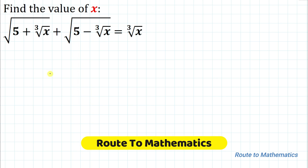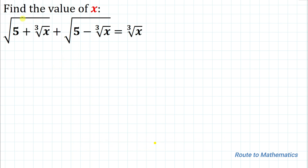Hello everyone, welcome to Root to Mathematics. In this video we are going to solve this interesting question. The given question is: find the value of x from the equation √(5 + ∛x) + √(5 - ∛x) = ∛x. We are asked to find the value of the variable x.